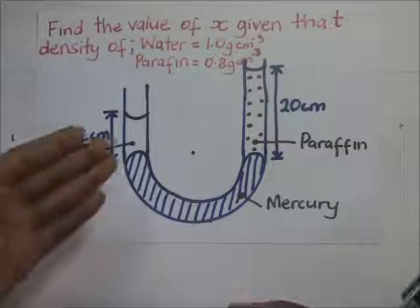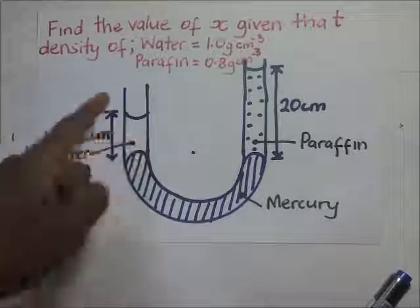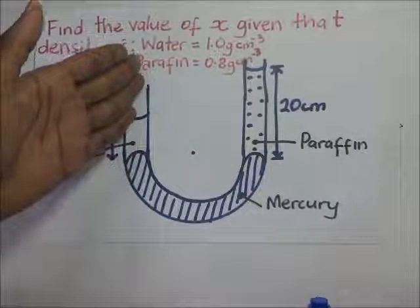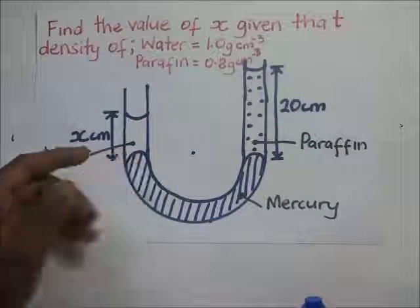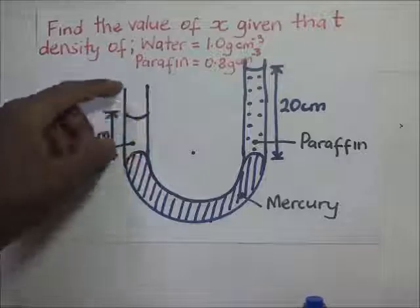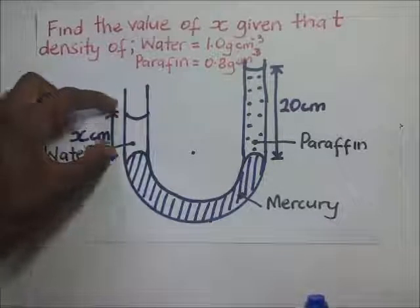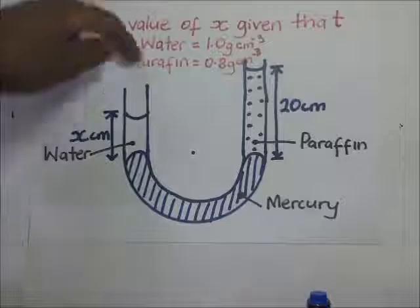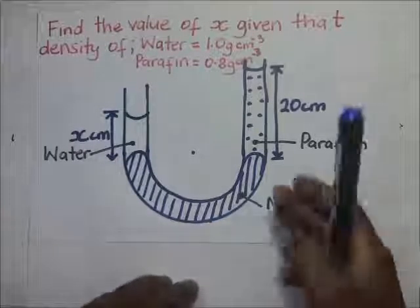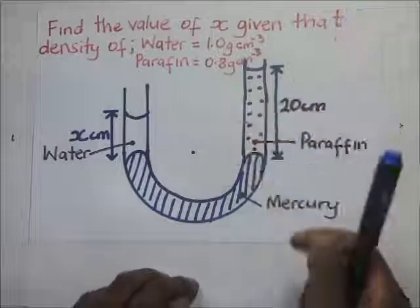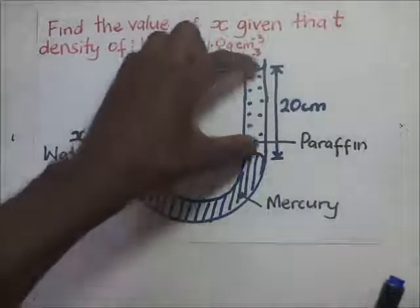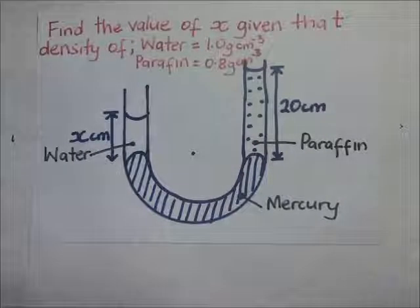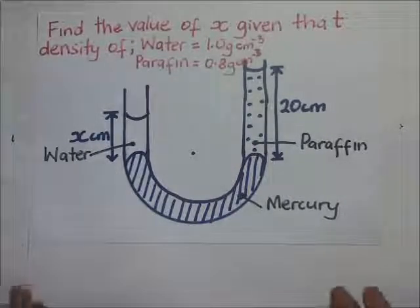Since both sides are open, the pressure in each limb is going to be the pressure of the liquid column in that limb plus the atmospheric pressure, because atmospheric pressure is acting on top of each open limb.